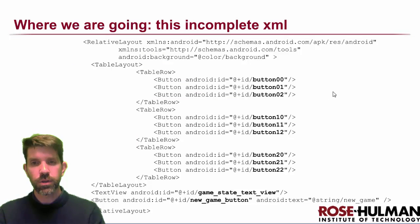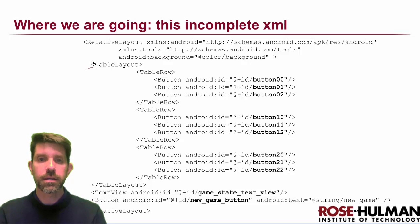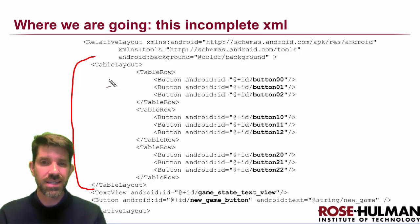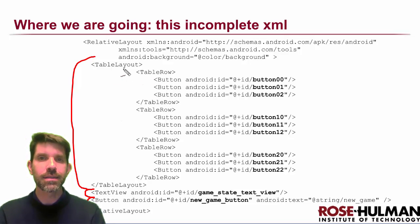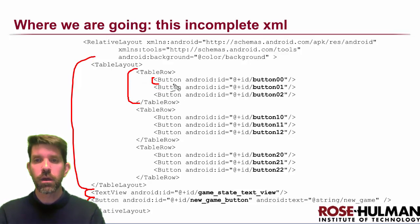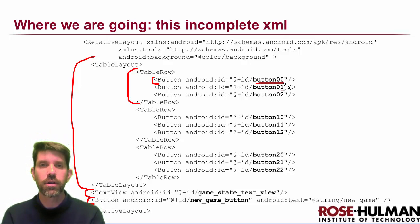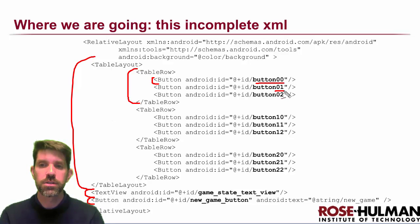Here's a heads-up on the overall XML structure: we'll have a relative layout containing basically three things. The buttons will be in a table layout, with a TextView above it and a button below it. Inside the table layout there will be three rows, and each row will have three buttons.